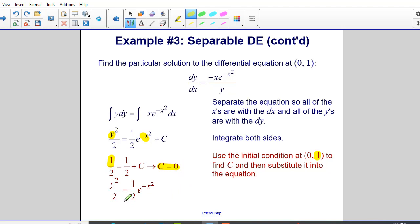So going back to my original equation, I have y squared over two is equal to one half e to the negative x squared power. And my plus c is zero, so I'm just left with this.